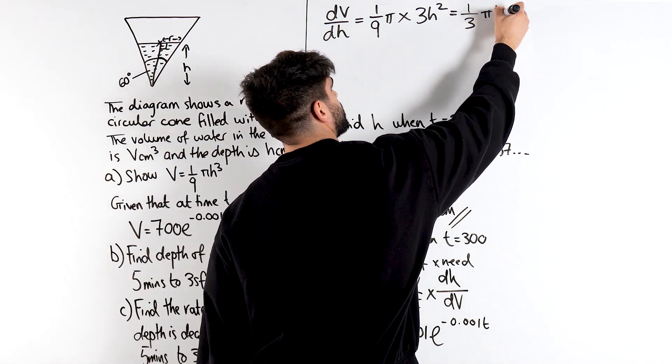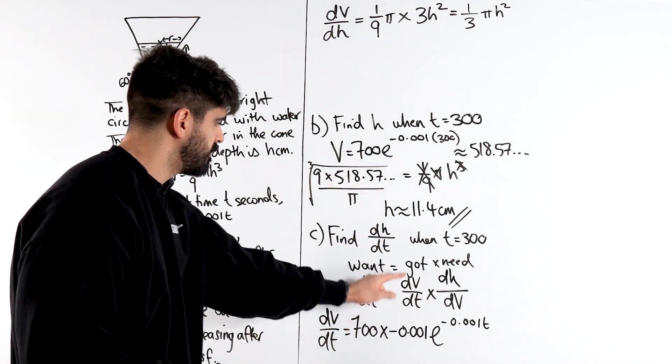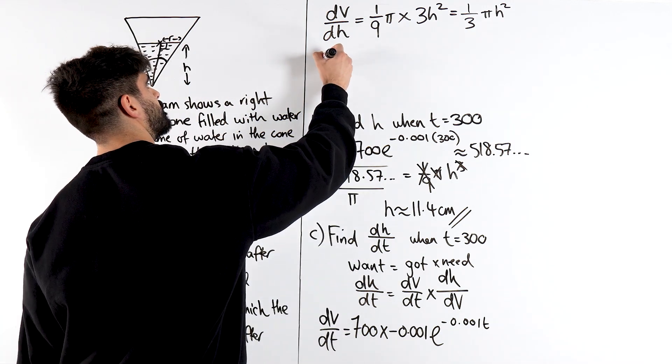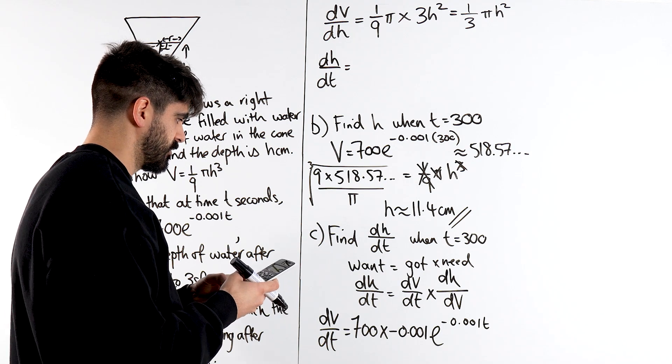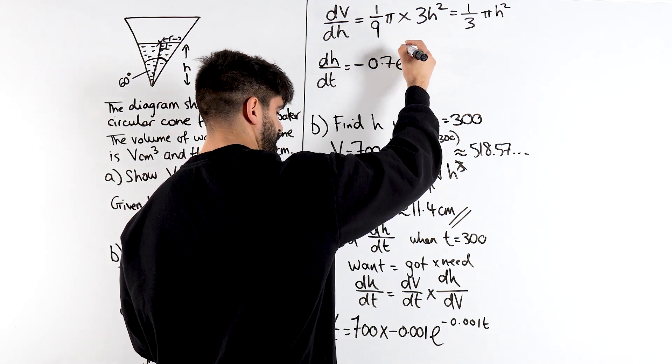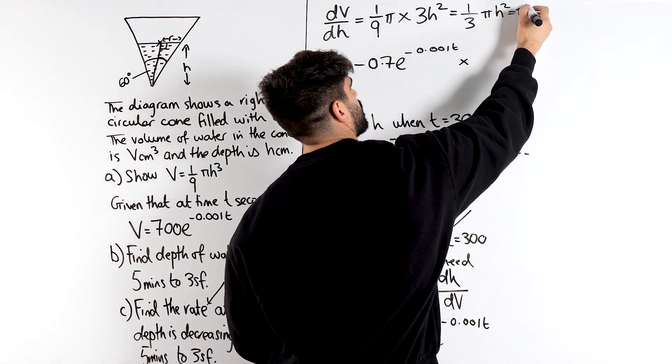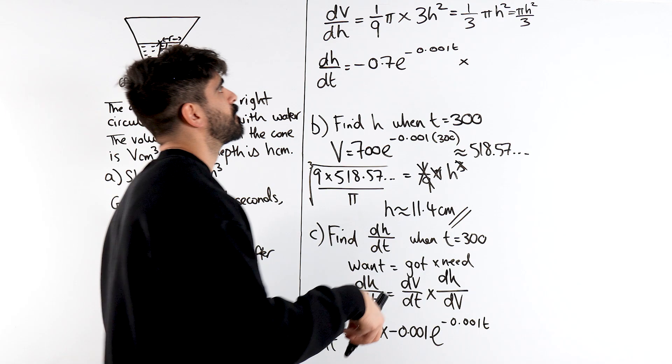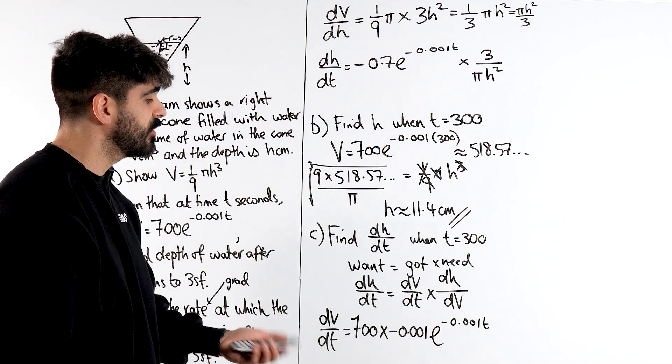Pi H squared. Okay. Now, let's be careful because that's dV dH. They want dH dV. dV by dT is all good. So, we're going to have to reciprocate. So, therefore, dH by dT is 700 times minus 0.001 times 700, minus 0.7. E to the minus 0.001T. Then, we're going to multiply that. Now, if we think of this as pi H squared over 3, we can just reciprocate that because that's dV dH. We want dH dV. So, that becomes 3 over pi H squared.